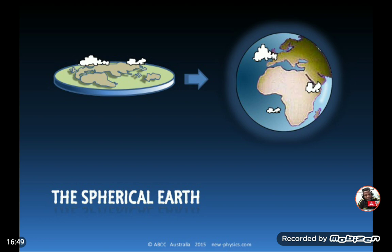The earth is spherical all around, yet it is somewhat flattened at the north and south poles and slightly bulging around the middle at the region of what we call the equator. The shape of the earth being geoid is proven easily in a number of ways, and we don't have to listen to the flat earth conspiracy theories.